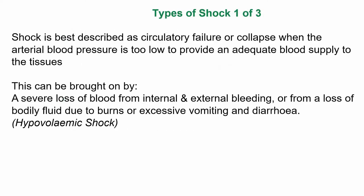So we get different types of shock. Shock is best described as circulatory failure or collapse when the arterial blood pressure is too low to provide an adequate blood supply to the tissues. This can be brought on by a severe loss of blood from internal and external bleeding, or from a loss of bodily fluid due to burns or excessive vomiting and diarrhoea. This is called hypovolemic shock.